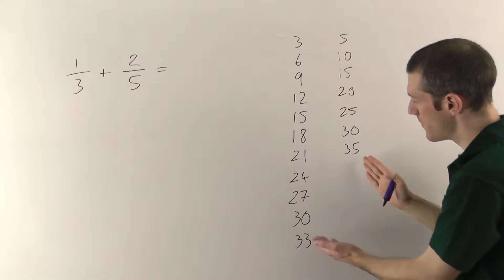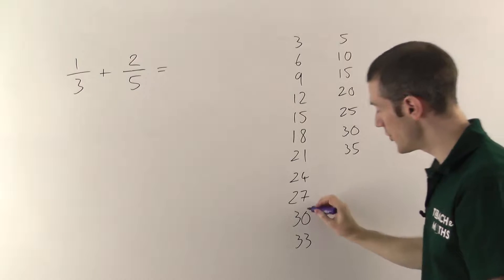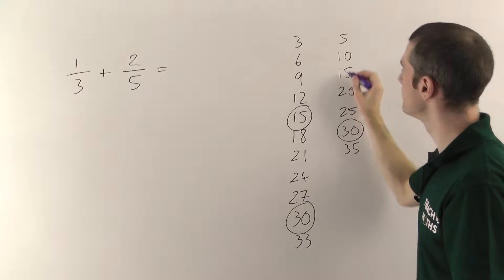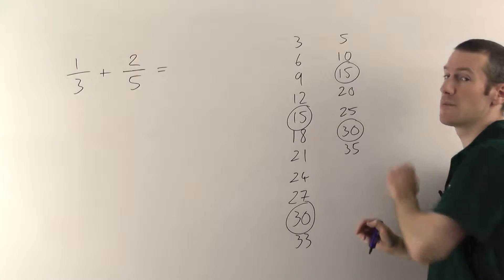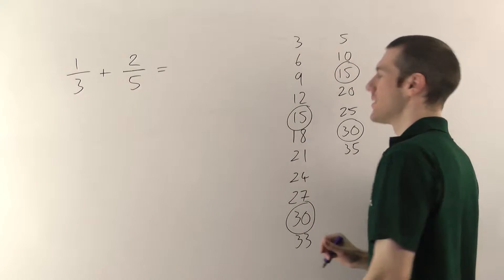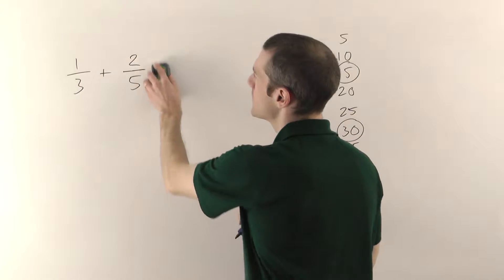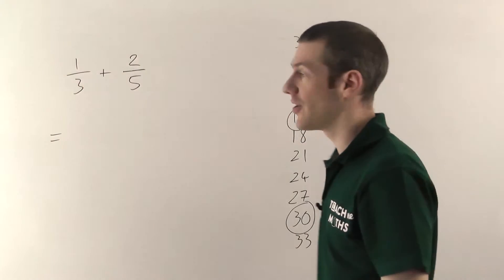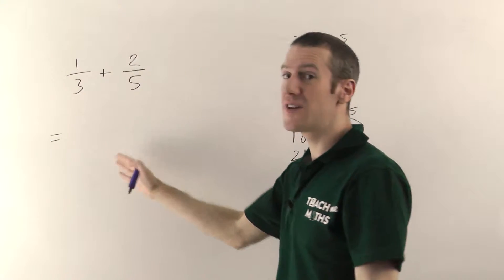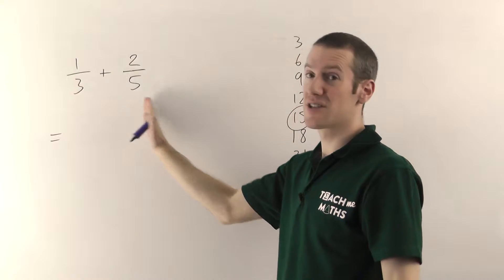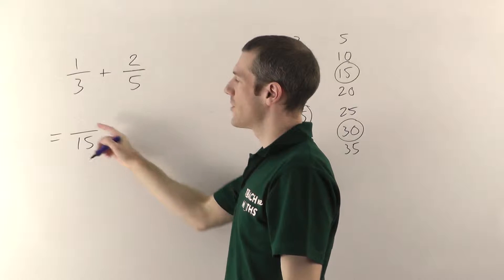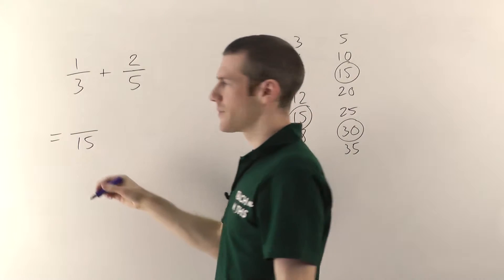30 is in both times tables, but so is 15. When you're doing this, you want the smallest number that's in both times tables — I'll explain why a little bit later. So I want to rewrite both of these fractions so they have 15 on the bottom instead of thirds and fifths. One third is going to become something over 15, and two fifths is going to become something over 15.